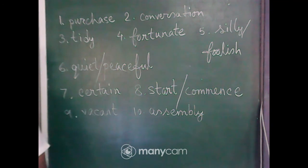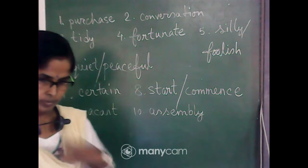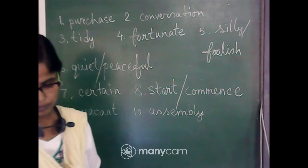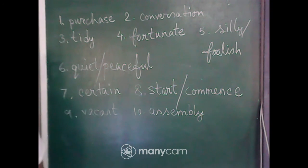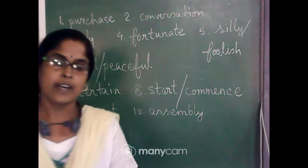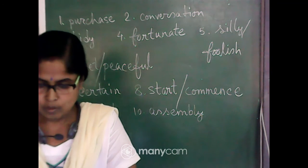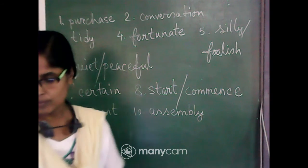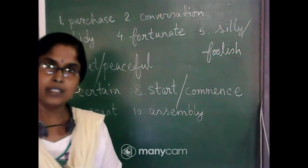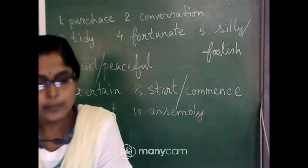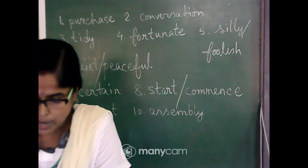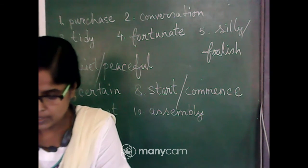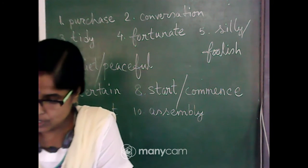I repeat — students, please check from number B. Heart — injured. Loyal — faithful. Large — huge. Sleepy — drowsy, D-R-O-W-S-Y. Serious — grave. Now number C: buy/purchase, talk/conversation, clean/tidy, lucky/fortunate, stupid/silly or foolish, calm/quiet or peaceful, sure/certain, begin/start or commence, empty/vacant, gathering/assembly.